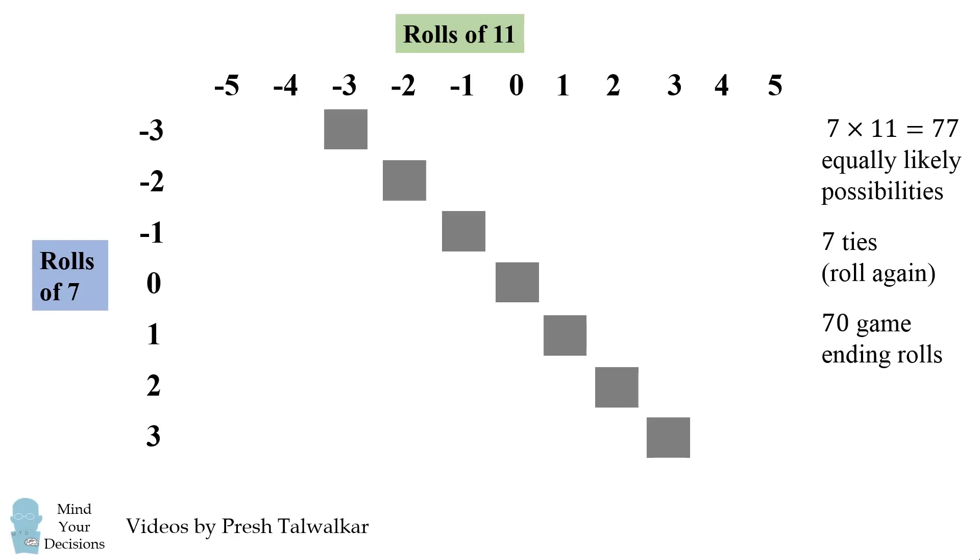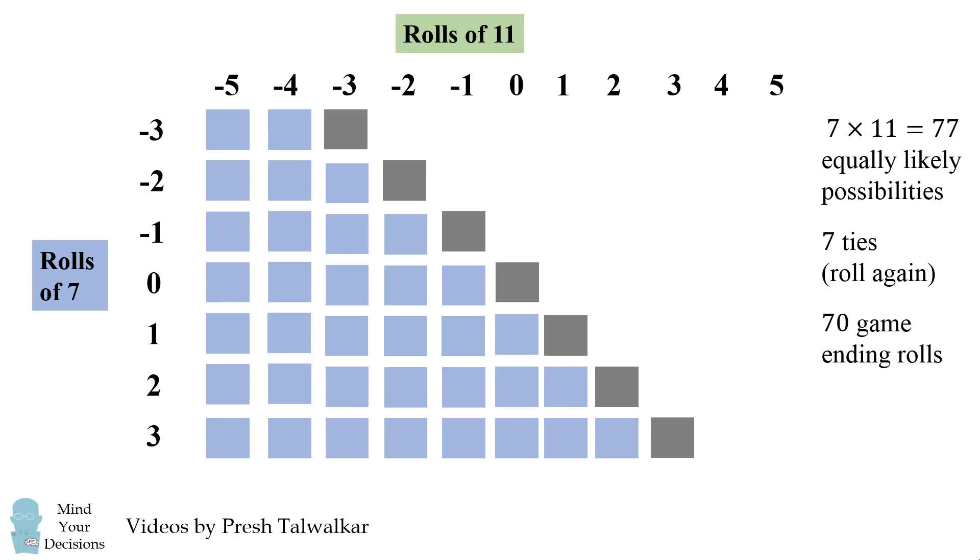Now imagine the seven-sided dice rolls a 1, and the 11-sided dice rolls a negative 4. 1 is larger than negative 4, so this will be a win for the seven-sided dice. In fact, all of these outcomes to the left of this diagonal will be a win for the seven-sided dice.